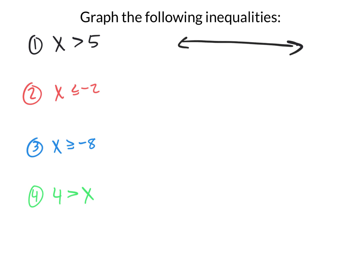For x > 5, put 5 in the middle, put 6 and 7 to the right, and 4 and 3 to the left. Is this going to be an open dot or a solid dot at 5? Open — because it does not have a solid line underneath the inequality, so you can't include 5. And from that open dot, do you go left or right? You go right because it says greater than. So you draw the arrow to the right.